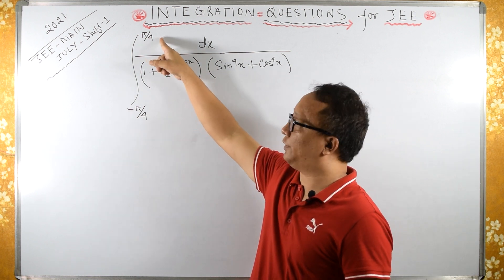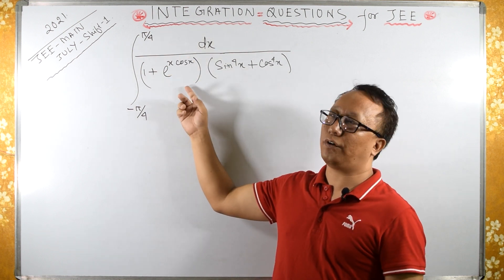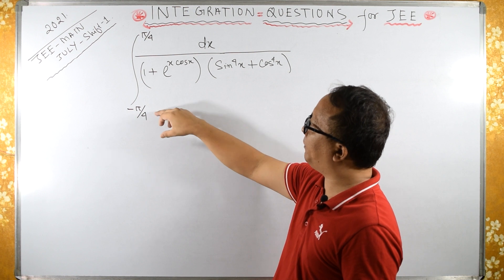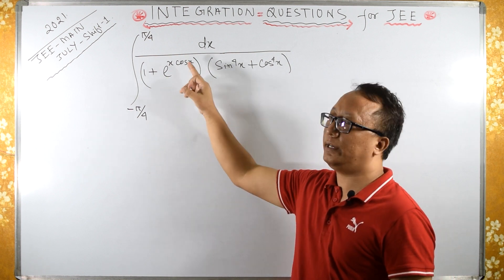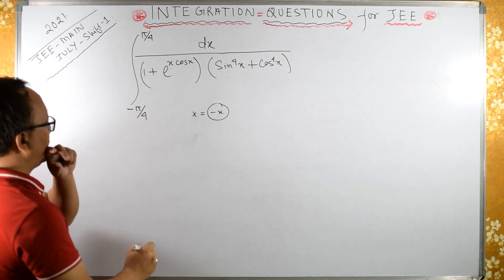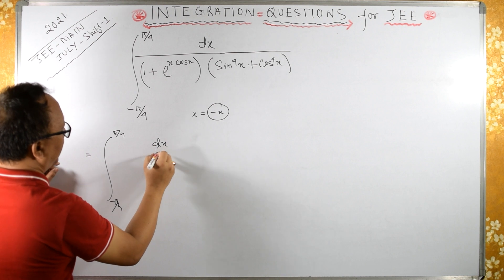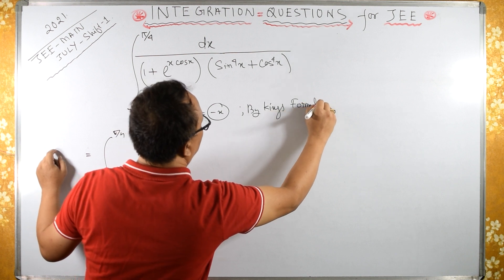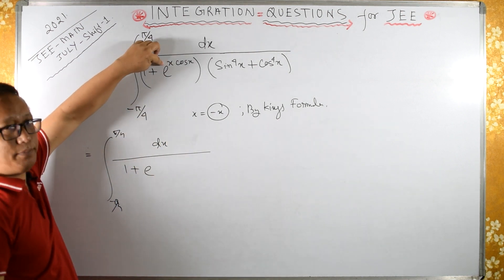The integral is from minus π/4 to π/4. Now it is of the form minus A to A, but this function is neither even nor odd. For integrals of the form minus A to A, if A plus B equals 0, we apply King's formula so that the exponential term will vanish. So instead of x we write minus x.